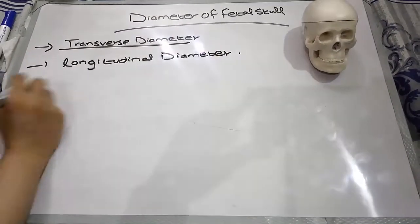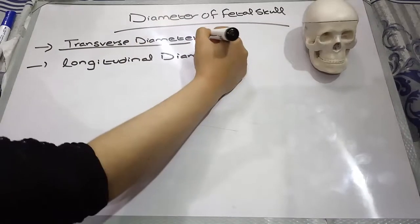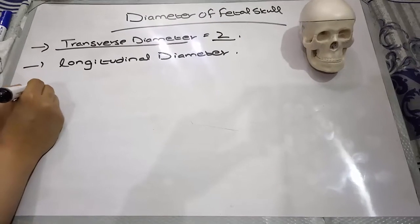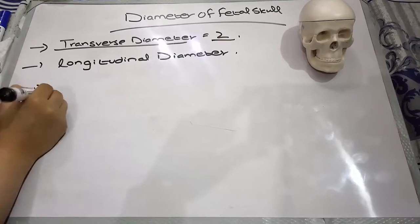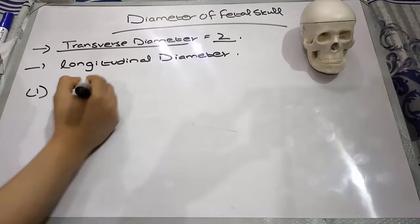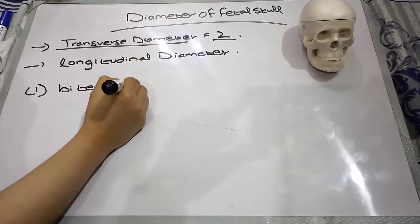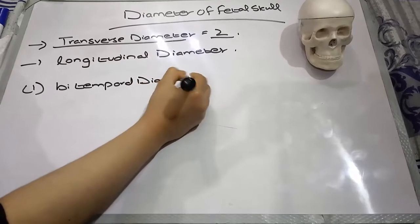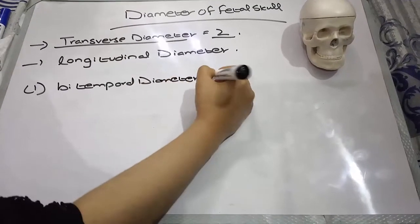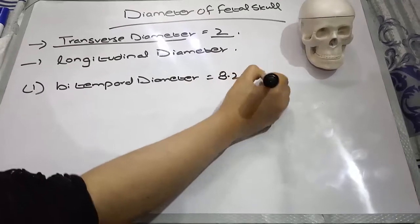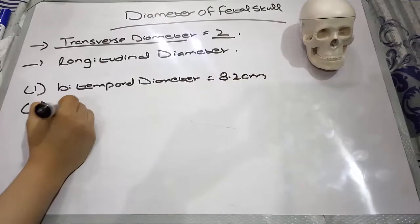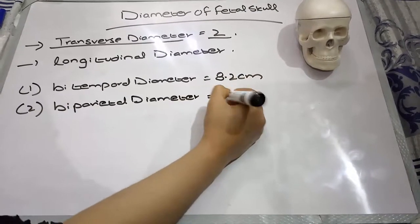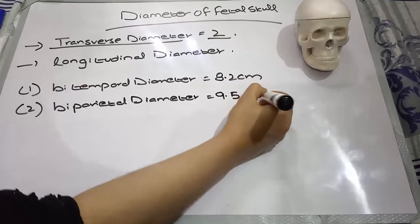Transverse diameters are basically two. The first is the bi-temporal diameter, which is 8.2 centimeters. The second is the bi-parietal diameter, and this is 9.5 centimeters.